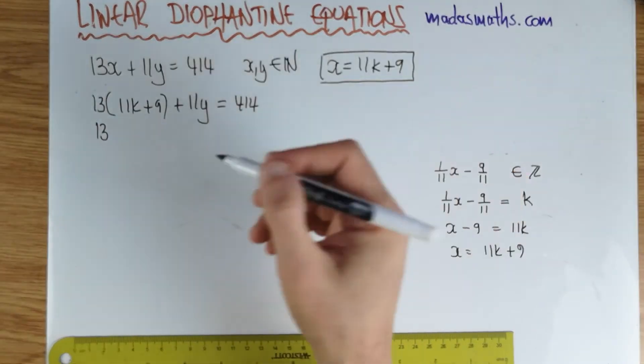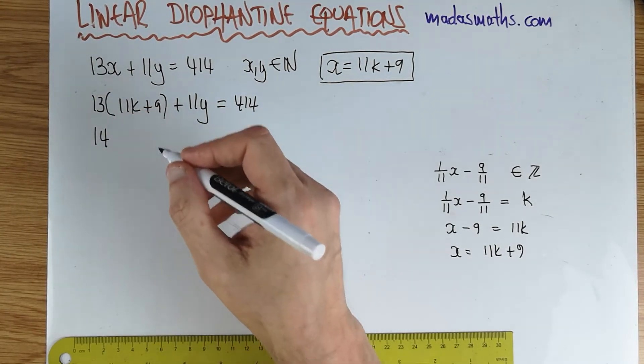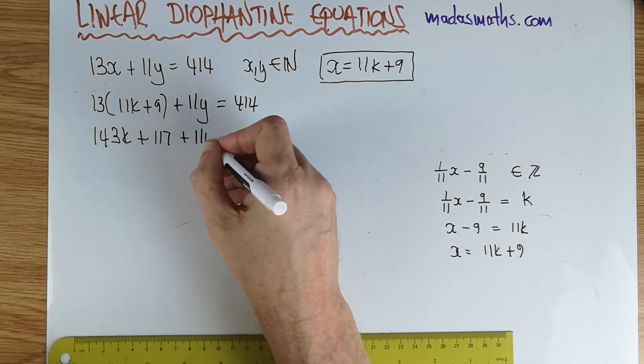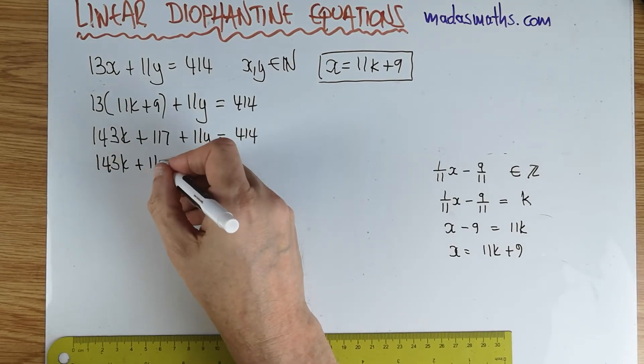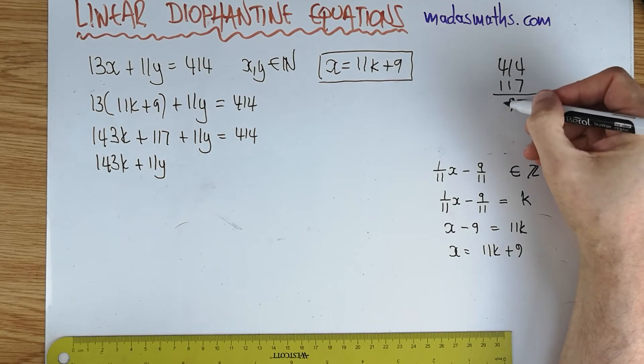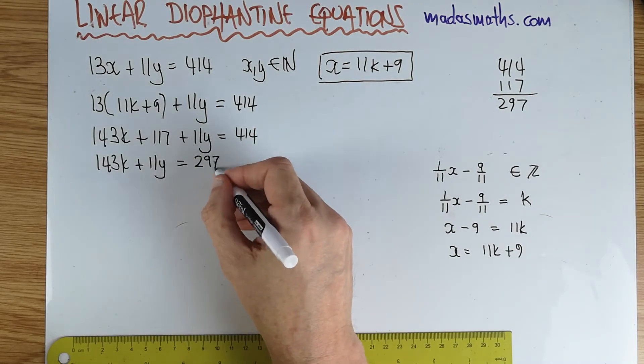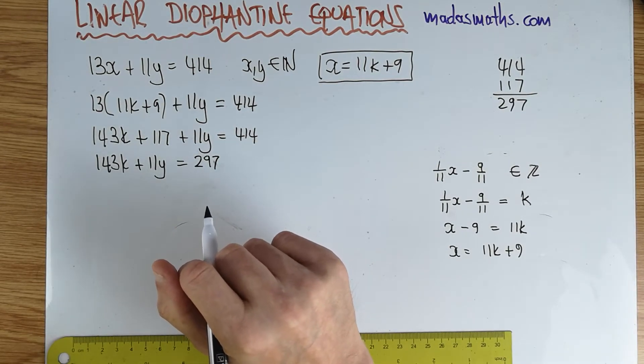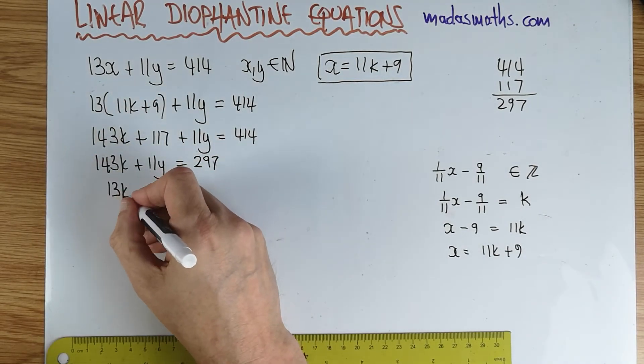So 143k plus 13 times 9 is 90, 117 plus 11y is equal to 414. 143k plus 11y, and I go 414 take away 117, 1297 is equal to 297. Now at this stage, this will be divisible by 11. So if we divide this by 11, because that's 13 times 11, I'm going to get 13k plus y.